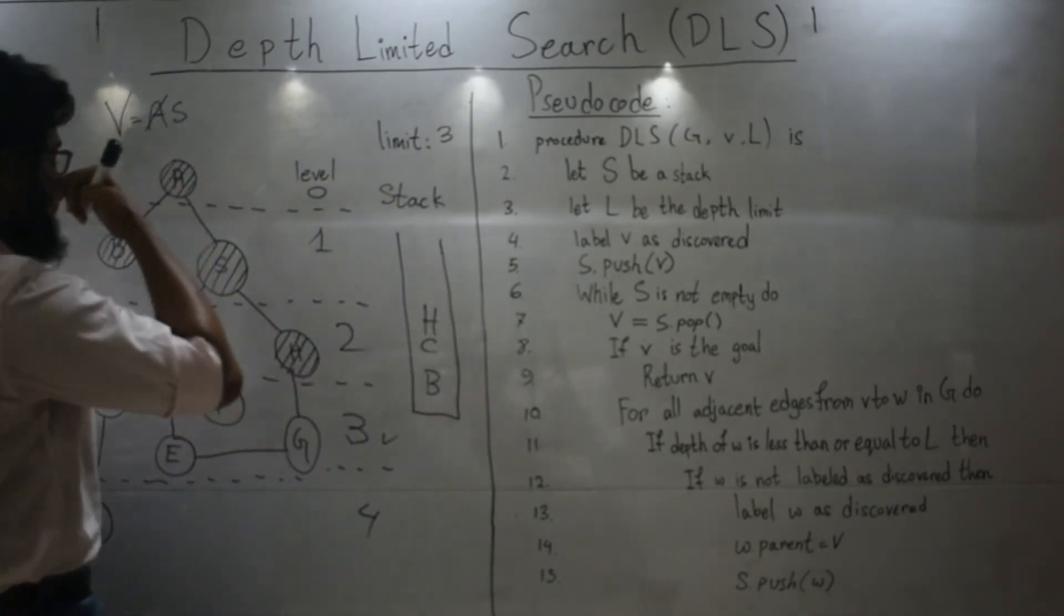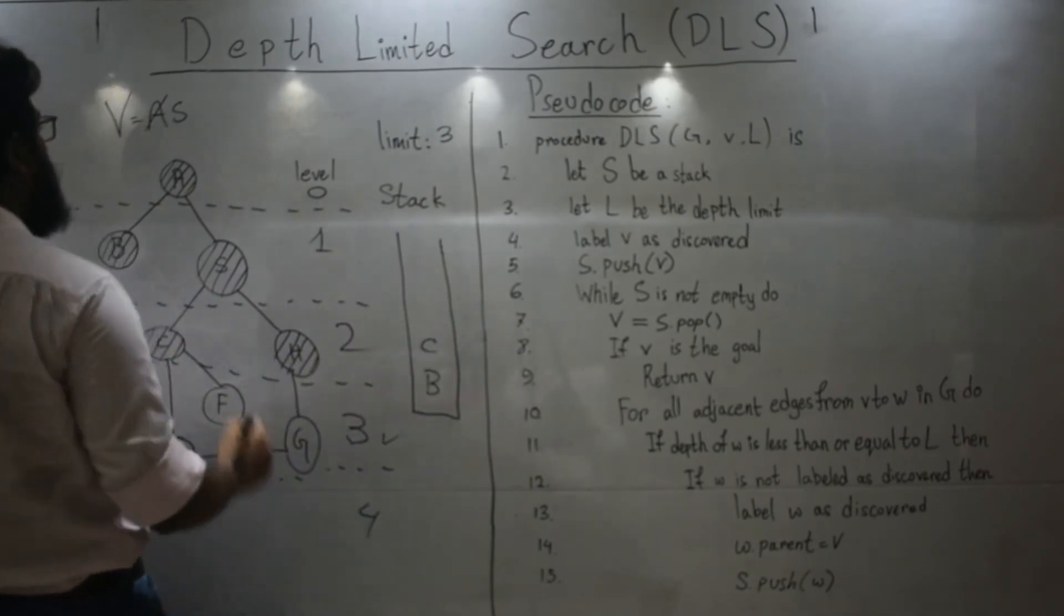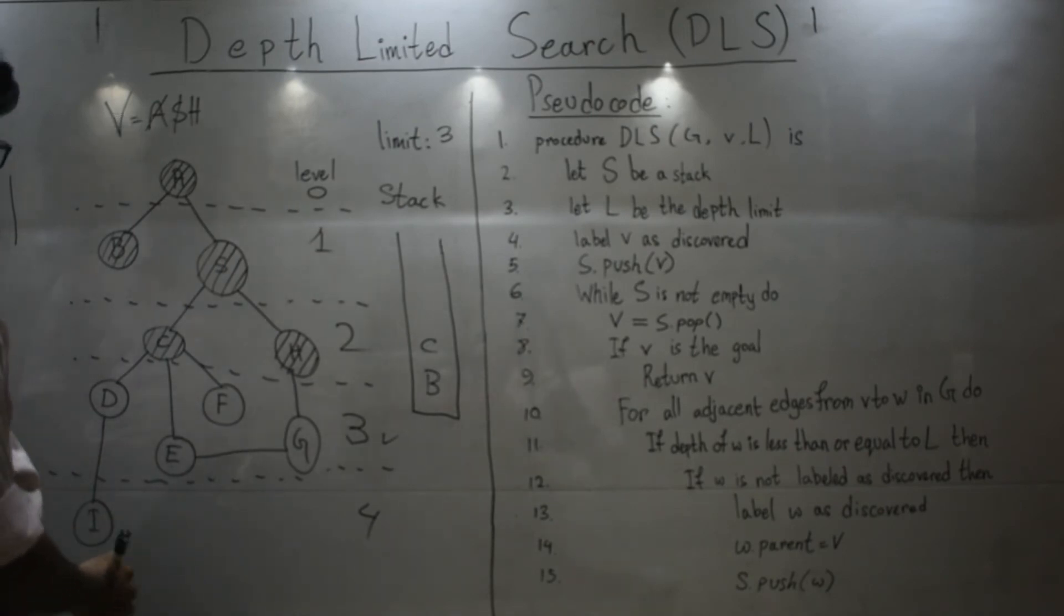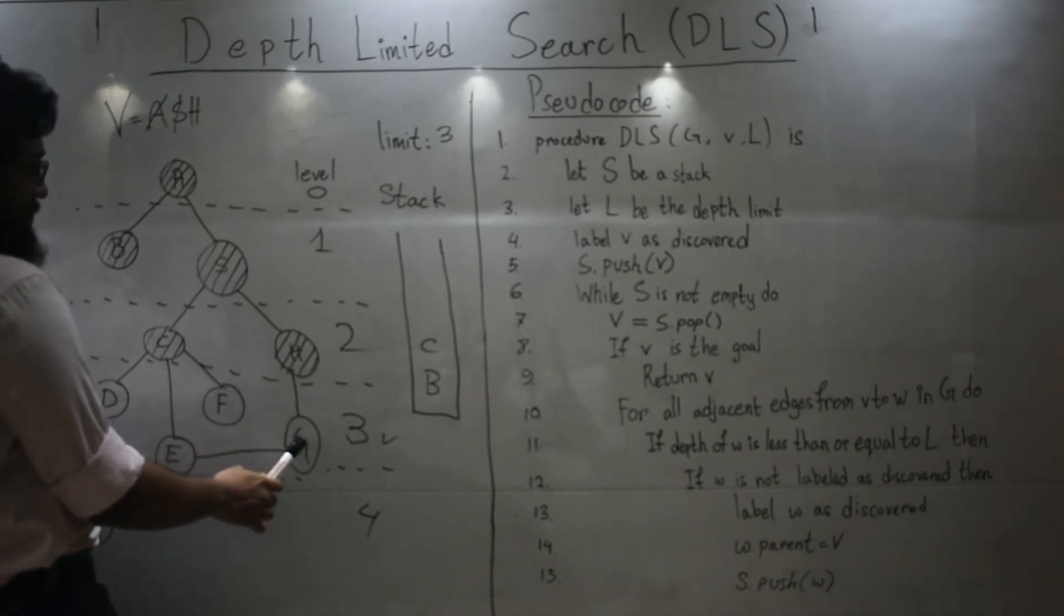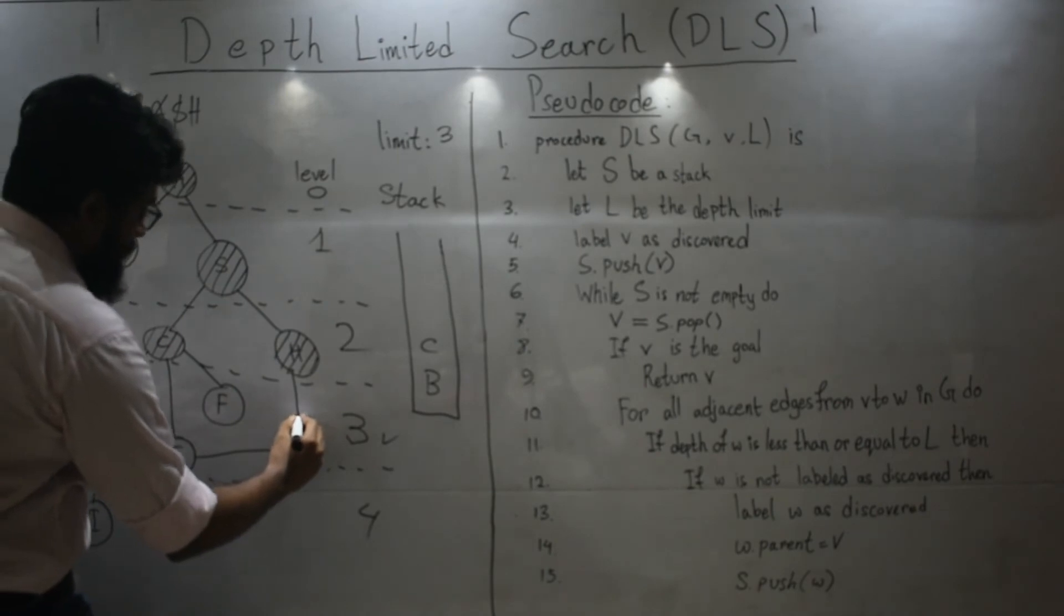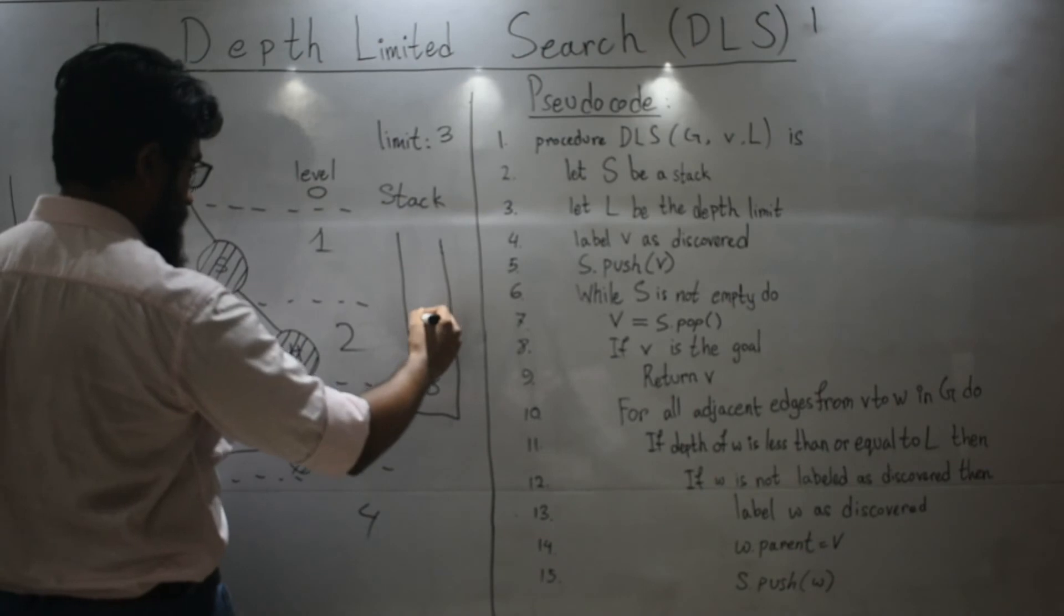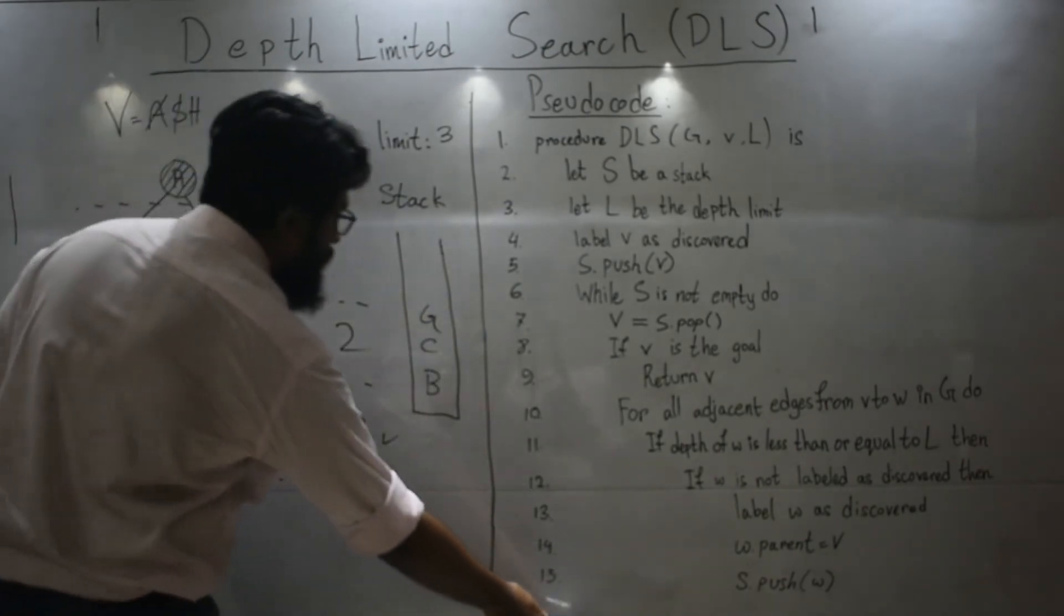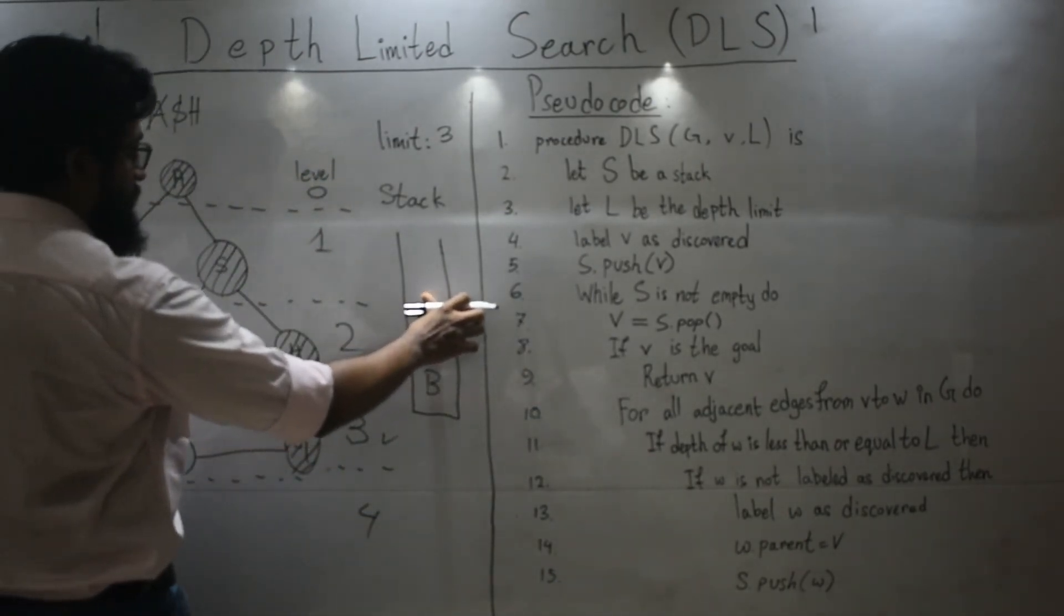So, we are in line number 7. And we will pop from the top of the stack. And we have H. H has two neighbors. S and G. G has not yet been visited and it's within the limit. So, let's visit, as well as push. And now, we will again come back to this line. Pop from the top of the stack. G.